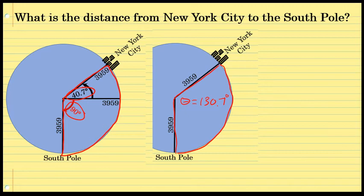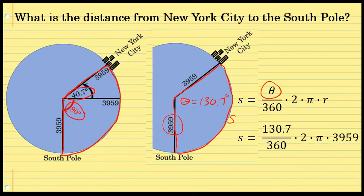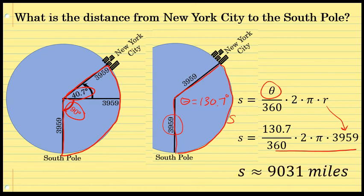So here we have a sector of a circle where the radius is 3,959, the central angle is 130.7 degrees, and the arc length s represents the distance from New York City to the South Pole. Again, we're going to use the arc length formula for a sector of a circle in degrees. With theta equal to 130.7, we get s equals 130.7 over 360 times 2 times pi times 3,959, the approximate radius of the Earth. This product is about 9,031 miles.